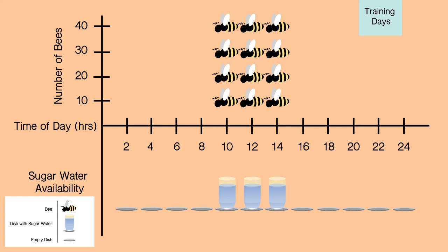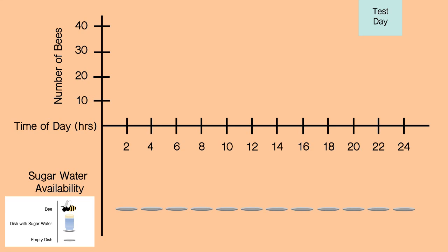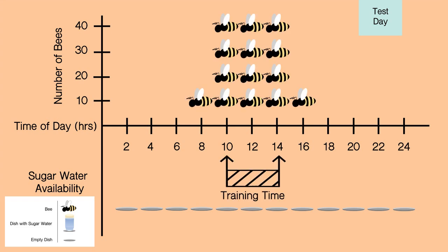After a series of training days, the dish was left empty for a day. The bees' visiting times were recorded on that day, and it was found that the bees arrived within or near the training time. This experiment showed that the bees were not using an external signal to tell the time of day because all external factors were kept constant during the entire experiment. This meant that the bees had to have an internal timekeeping mechanism. Beiling also showed that the bees could not be trained outside of a 24-hour interval. This finding supported the conclusion of a 24-hour-based internal clock as the source of time memory. These experiments shifted the view of circadian rhythms from being just a biological curiosity to being regarded as stemming from internal time-measuring devices.